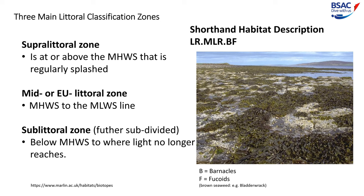When we look into the categorisation of littoral rock zones, there are three main littoral classifications which can be subdivided. The superlittoral zone is at or above the mean high water springs — that is, regularly splashed. The mid or eulittoral, which is intertidal, is between the mean high water spring and the mean low water spring line. The sublittoral zone is further divided — this is permanently covered with seawater and where water is never so deep as to take it out of the photic zone. This results in high primary production and makes the sublittoral zone the location of the majority of sea life.